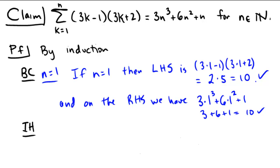Okay, the second stage is the induction hypothesis. For the inductive hypothesis, we'll assume that if we take the sum from k equals 1 to m of 3k minus 1 times 3k plus 2, that this would be equal to 3m cubed plus 6m squared plus m. The big difference between an induction hypothesis and what we're trying to prove is that we're going to assume this is true for some m.